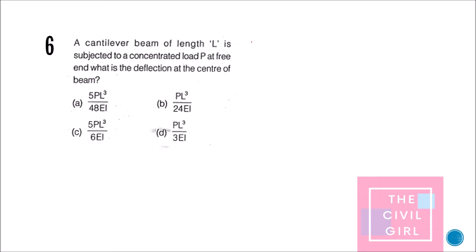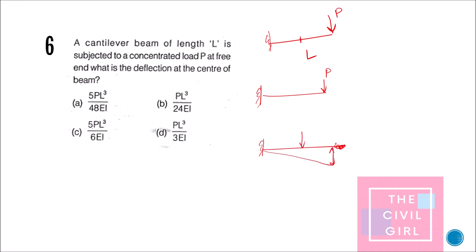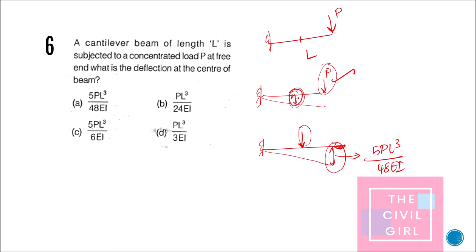Next question: a cantilever beam of length L is subjected to a concentrated load P at the free end. What is the deflection at the center of the beam? An important concept here: the deflection at a point due to a load at another point equals the deflection at that other point due to a load at the first point (Maxwell's reciprocal theorem). The deflection at the midpoint when load acts at the free end is 5PL³/48EI. So the deflection at midspan is also 5PL³/48EI. The answer is option A.